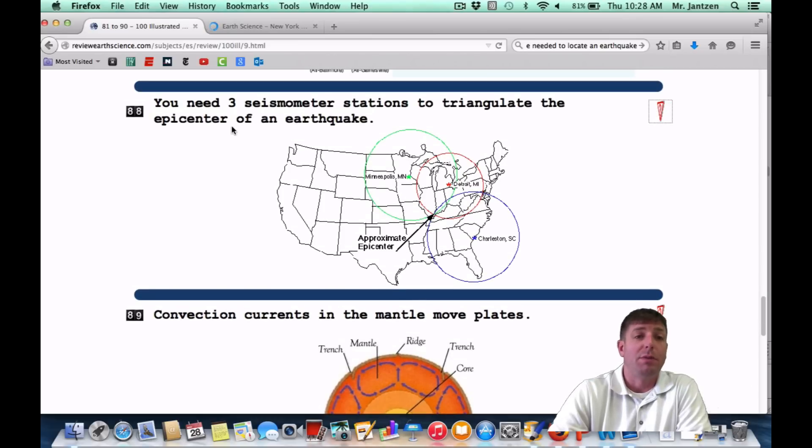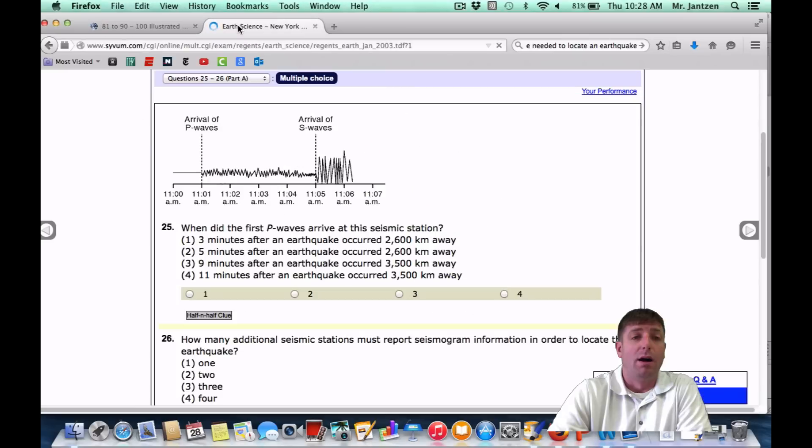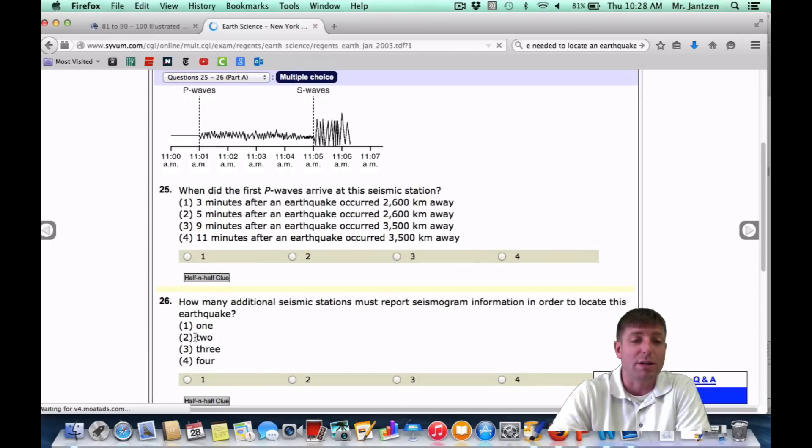As a regents question, it may appear something like this. So once again, they're giving you a seismogram here. We're going to skip down to question number 26. It says, how many additional seismic stations must report seismogram information in order to locate this earthquake? So the keyword here is additional. They're giving you one seismogram. So now you need an additional two more. So your answer actually is going to be two. Believe it or not. That's a tricky question because we've been saying three all along, but the question is asking you how many additional ones do you need.